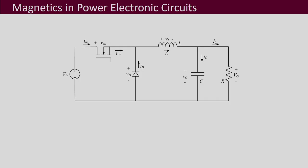This is the buck converter circuit, which you are very much familiar with and have been using for our discussions. This is the inductor which is in this power electronic circuit, and as we have discussed before, it has to operate at high switching frequencies. Depending on the power rating, it could be from kilohertz to even hundreds of kilohertz and up to megahertz.